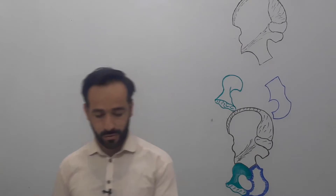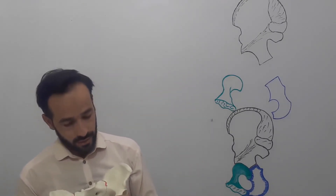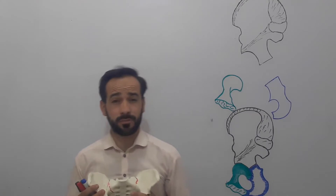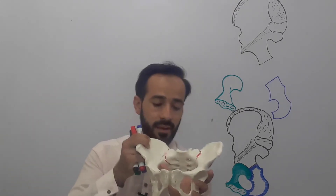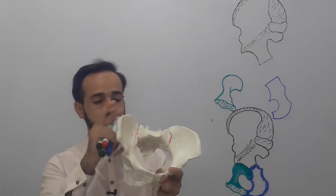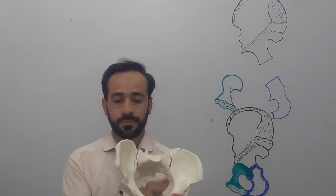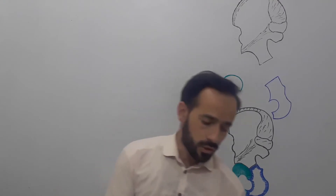Hello dear friends, welcome back. We are here to discuss the pubic bone. In the previous lecture, I introduced the pubic bone as a basin-shaped bone that makes the pelvic cavity of the body. We said that this pelvic cavity is made up of three bones: the two pubic bones, the sacral bone, and the coccygeal bone.